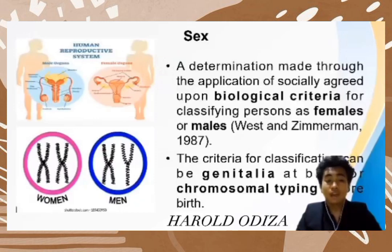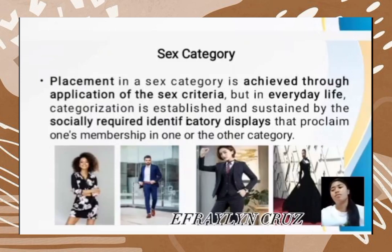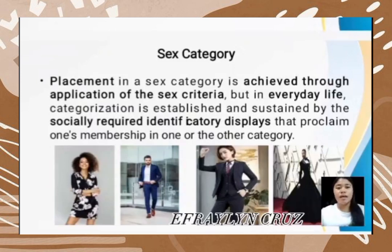Sex is a determination made through the application of socially agreed-upon biological criteria for classifying persons as female or male. The criteria for classification can be genitalia at birth or chromosomal typing before birth. Sex category is male or female placement, and this placement is only achieved when one passes the sex criteria.